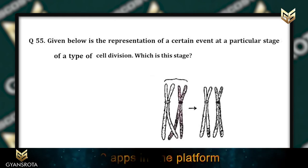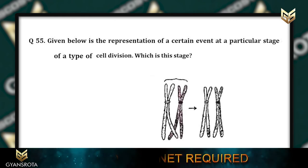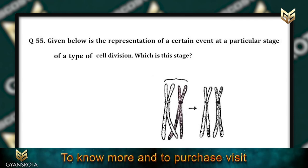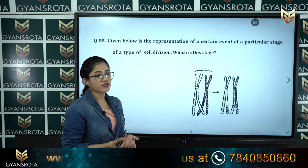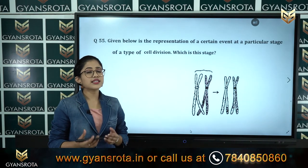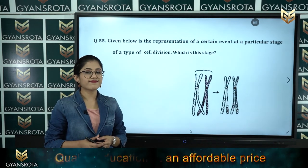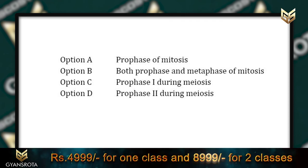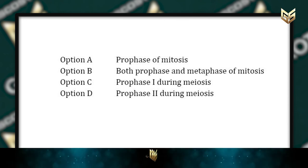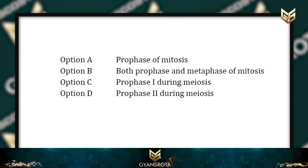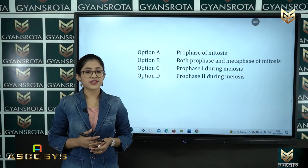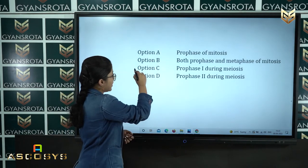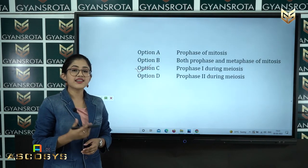Question 55: A diagram represents a certain event at a particular stage of a type of cell division. Options are: A: Prophase of mitosis, B: Both prophase and metaphase of mitosis, C: Prophase 1 during meiosis, D: Prophase 2 during meiosis. The correct answer is option C, Prophase 1 during meiosis.